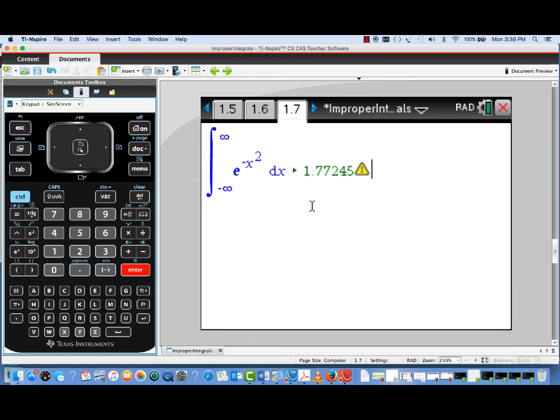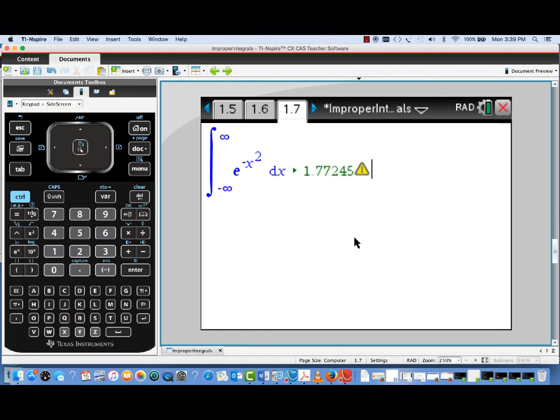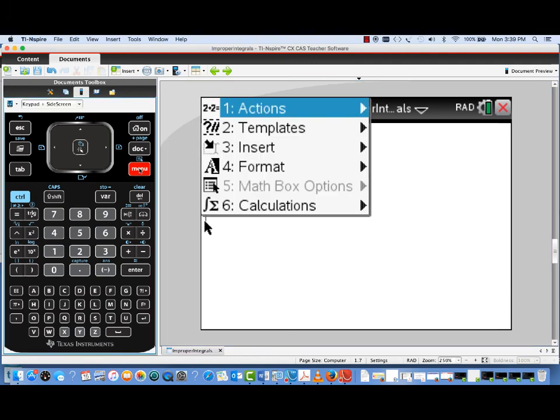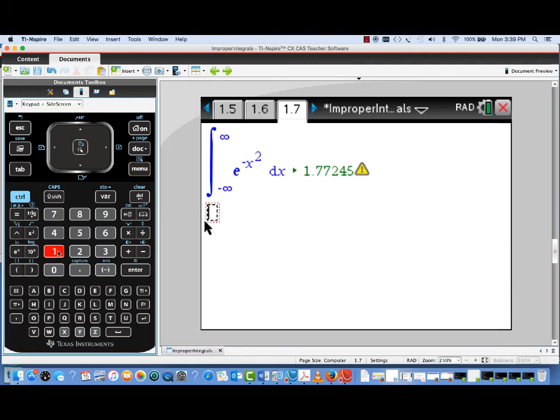Ah, we get that warning symbol again. And again, that warning symbol says we might want to be wary of the numerical accuracy of this result. Now, this is an important integral in probability theory, and it's actually known that this integral converges to the square root of pi. So I'm going to insert a math box here and actually get a decimal approximation for the square root of pi and just see how close we got.